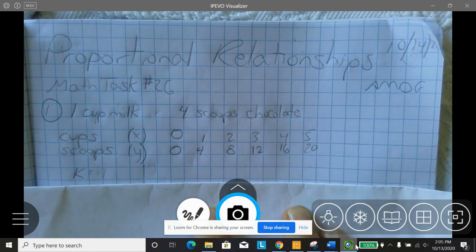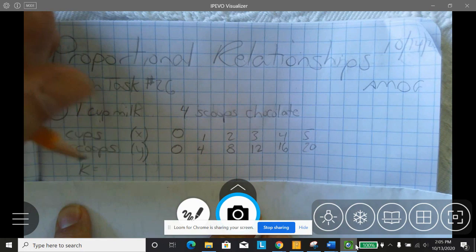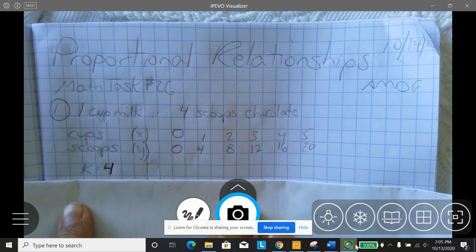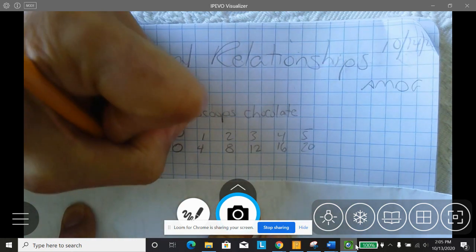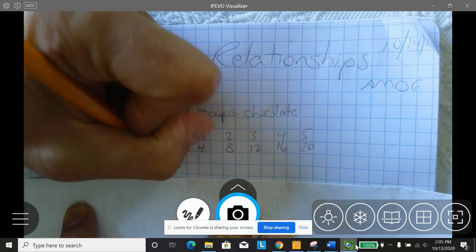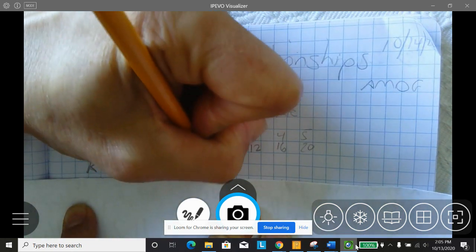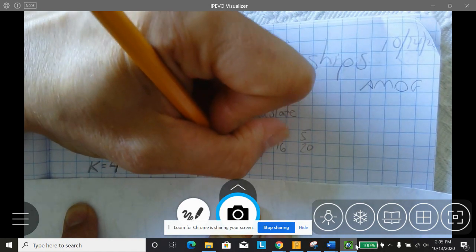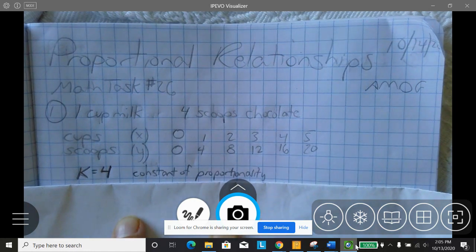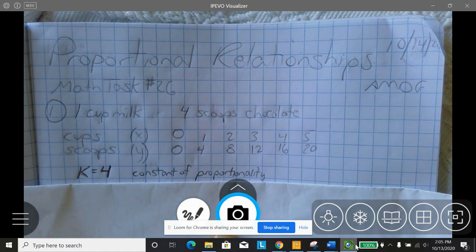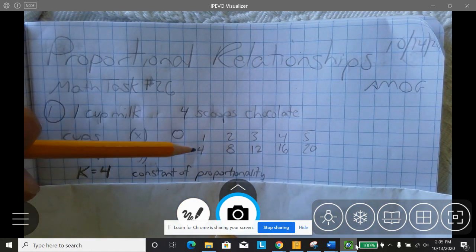Now, what does that mean? That means that for every cup of milk, she needs 4 scoops of chocolate. That is what we call the k value, the constant of proportionality. That's an important number when working with proportions. It's what number do you multiply x by to get y?